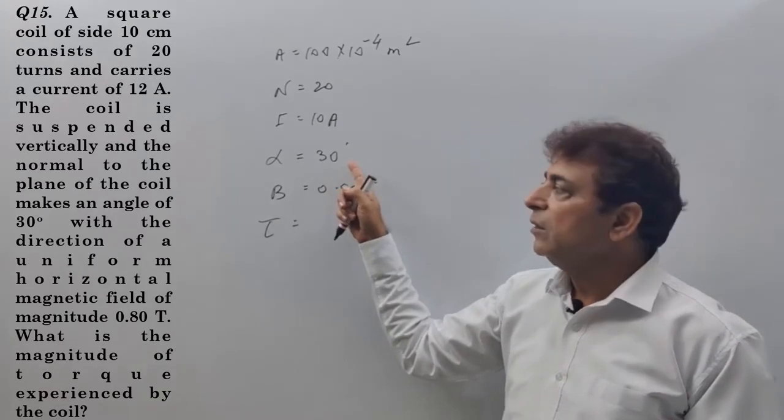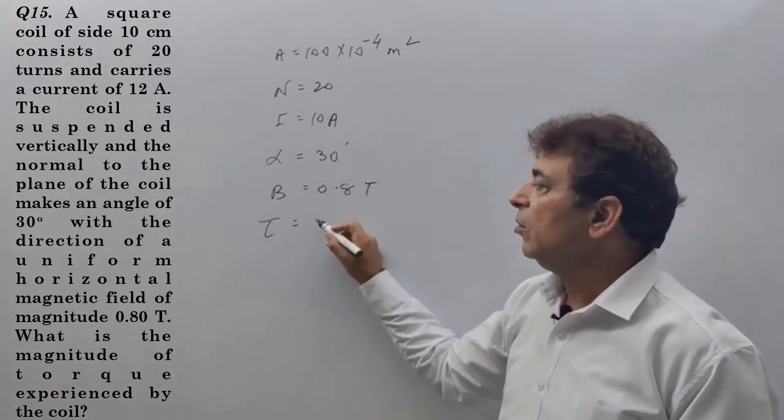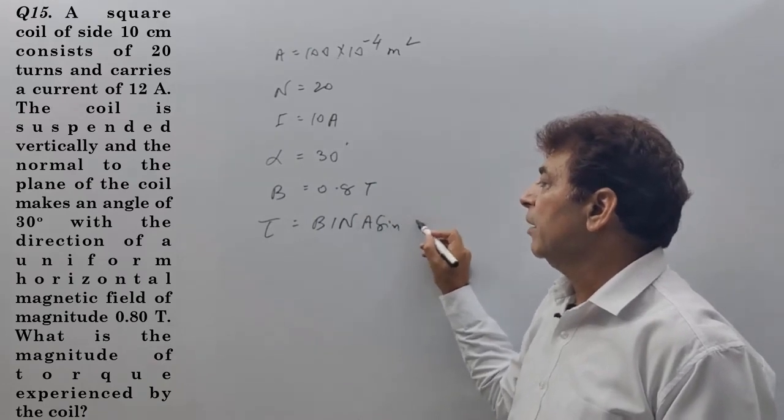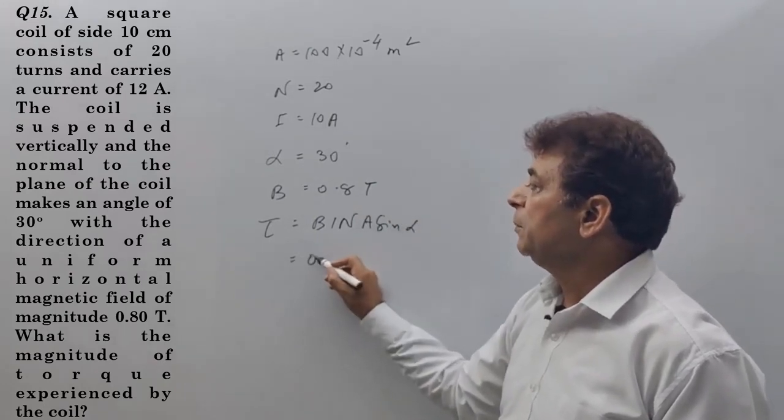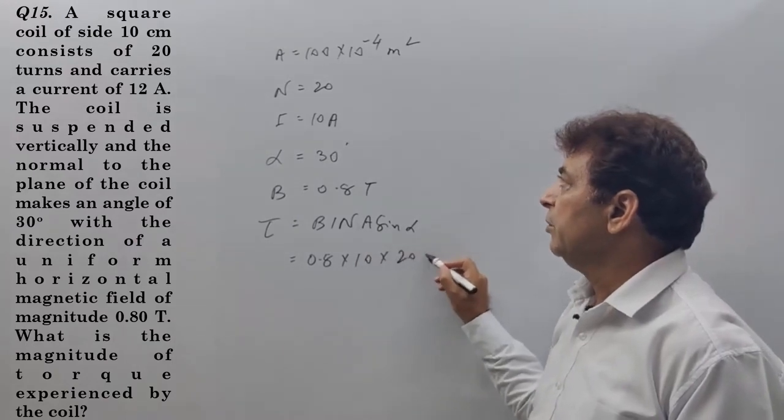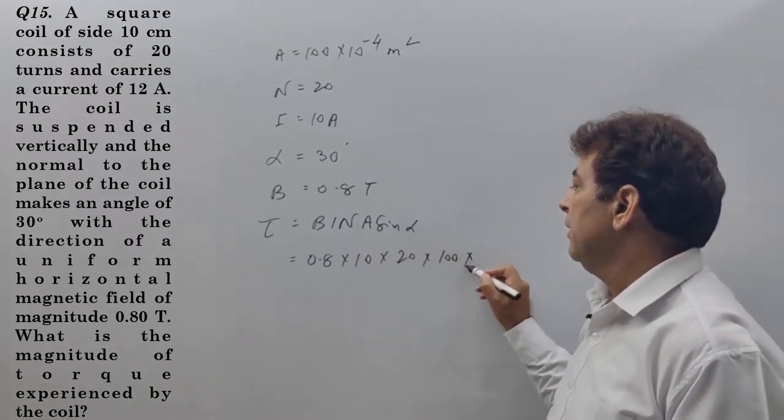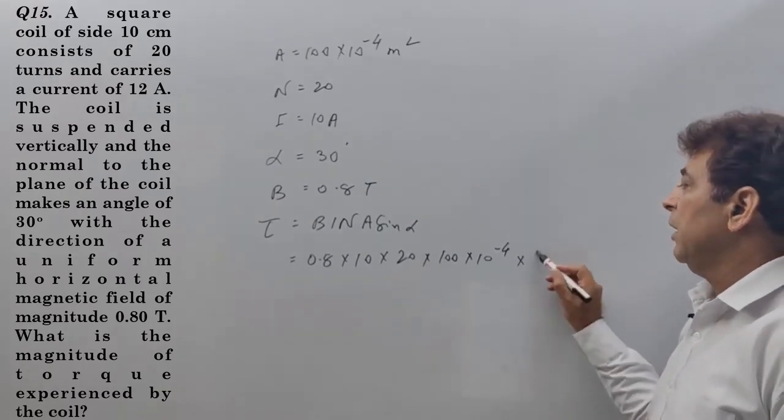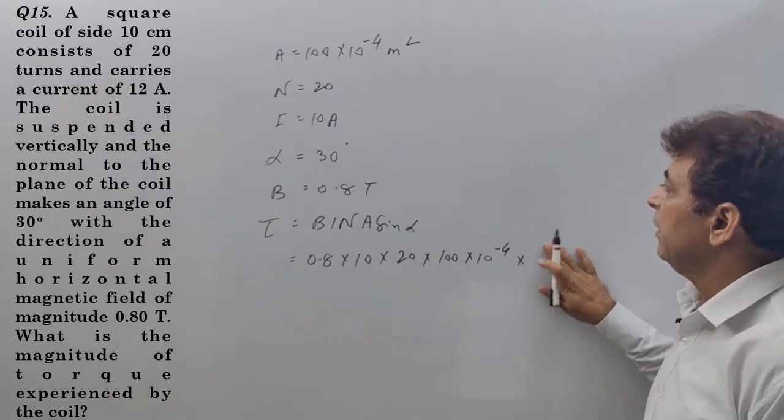The number of turns is 20, area is 100 cm square. Torque equals N I A B sin theta, which is 10 to the power minus 4 into sin alpha. Sin theta is?